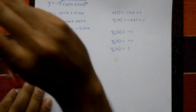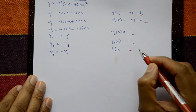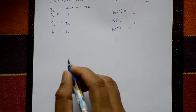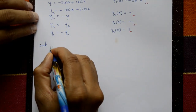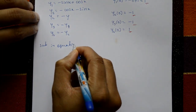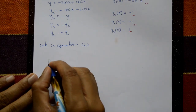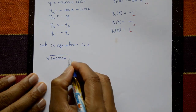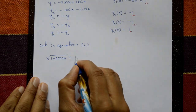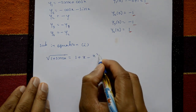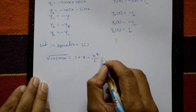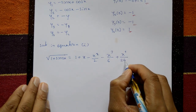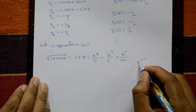Substitute y(0) = 1, y1(0) = 1, y2(0) = −1, y3(0) = −1, y4(0) = 1 into equation number 1. Therefore √(1 + sin 2x) = 1 + x − x²/2! − x³/3! + x⁴/4! = 1 + x − x²/2 − x³/6 + x⁴/24 + ... This is the required answer.